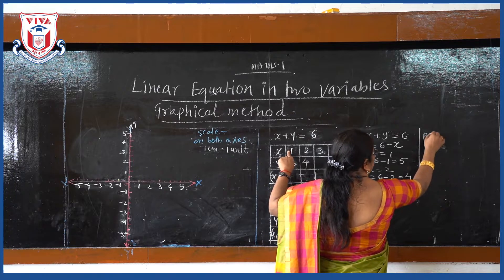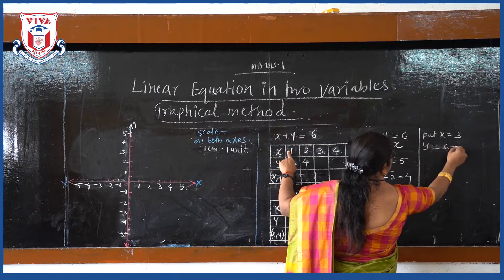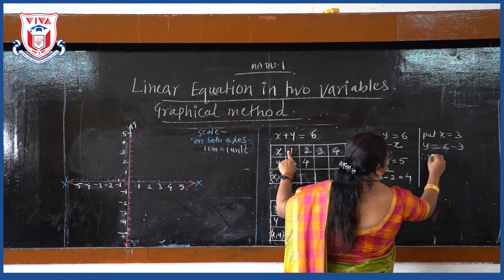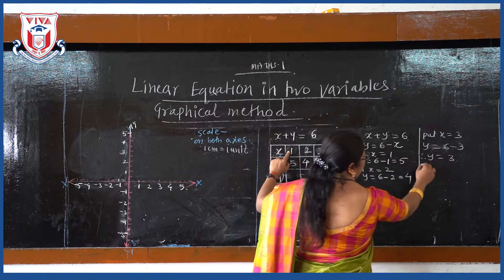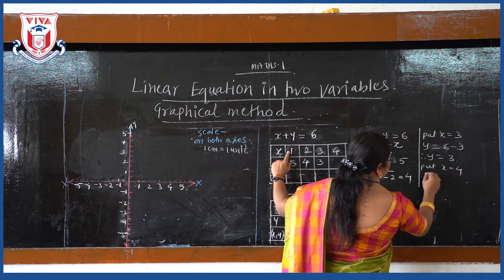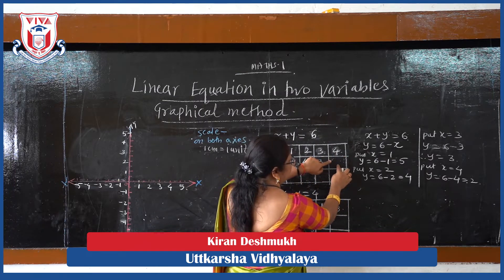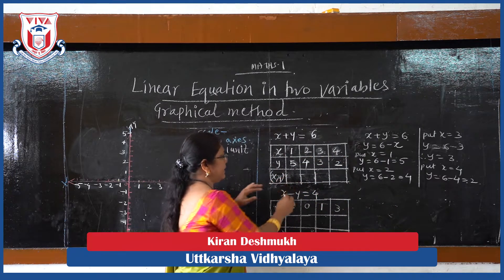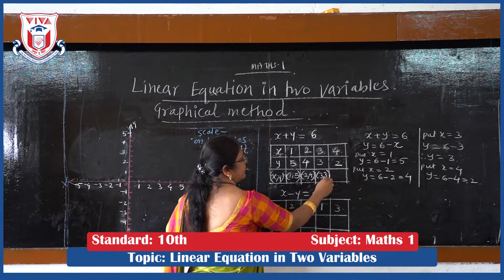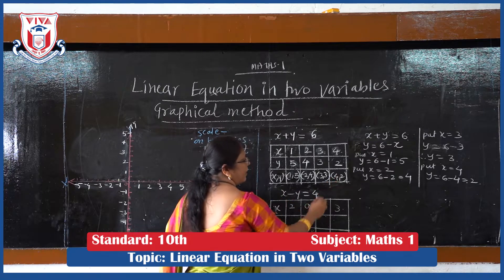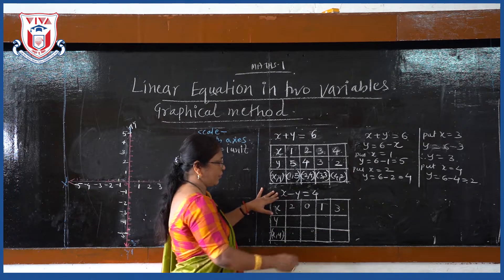Put x equal to 3, so y is equal to 6 minus 3, that is 3. When x equals 3, y is also 3. Put x equal to 4, so y is equal to 6 minus 4, that is 2. When x equals 4, y equals 2. So we get the coordinates as (1,5), (2,4), (3,3), and (4,2).